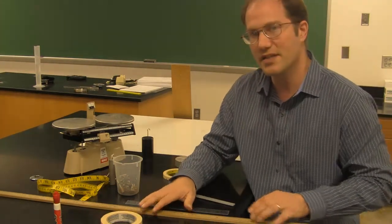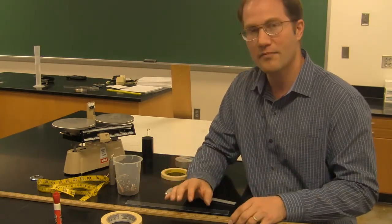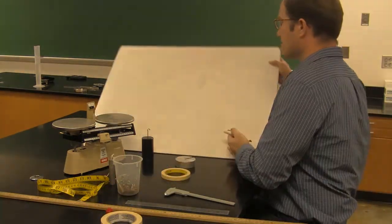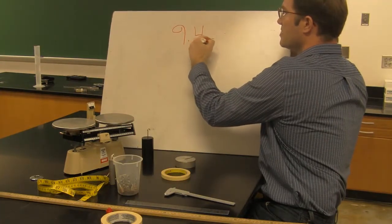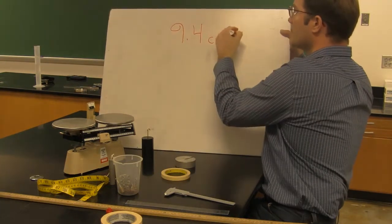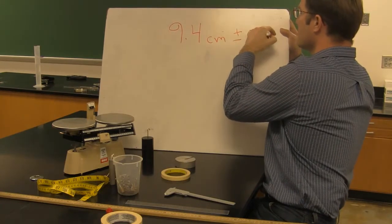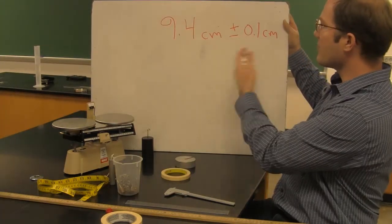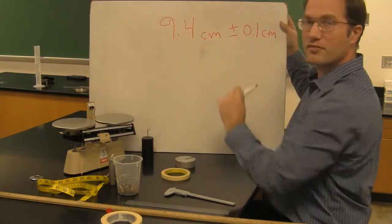If I just use the least count as a measure of my uncertainty, I can say that my uncertainty is plus or minus a millimeter. If I wanted to write that data point, it would look like this: 9.4 centimeters plus or minus 0.1 centimeters. This is how to write it. Here's my uncertainty and here is the actual measurement itself.